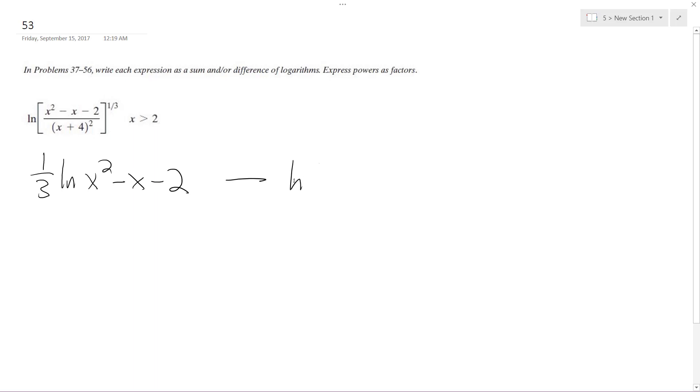minus natural log of x plus four squared. And the reason why I can do this is when you have quantity a over b to the one third, it's the same thing as a to one third over b to one third.